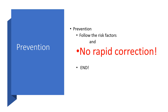Prevention — that is the key. This entire presentation could be centered around prevention of ODS because it is better that it does not occur. We have to review the risk factors and make sure they are all corrected or handled appropriately. The best, clearest definition of prevention here is no rapid correction of hyponatremia. I repeat: no rapid correction or no too-fast correction of hyponatremia, particularly in chronic hyponatremia.